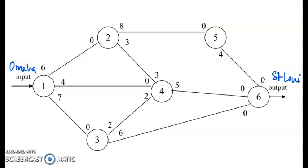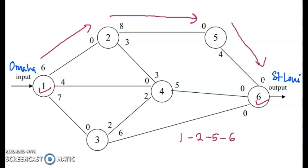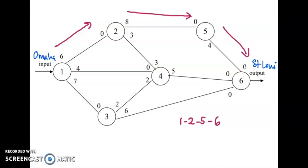Back to our steps — first, select any path in the network from origin to destination. We start from node 1, which is our origin, and we want to go to node 6, which is our destination. Let's say I choose: from node 1, go to node 2, then node 5, then finally node 6. To find the maximum flow through this path, we compare all the capacity values along it.